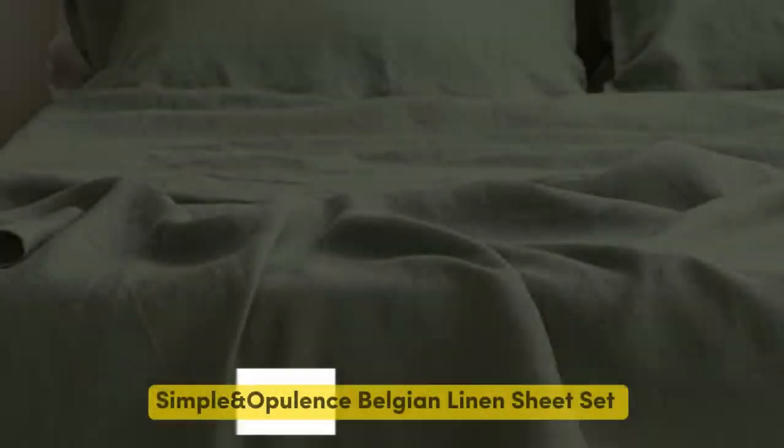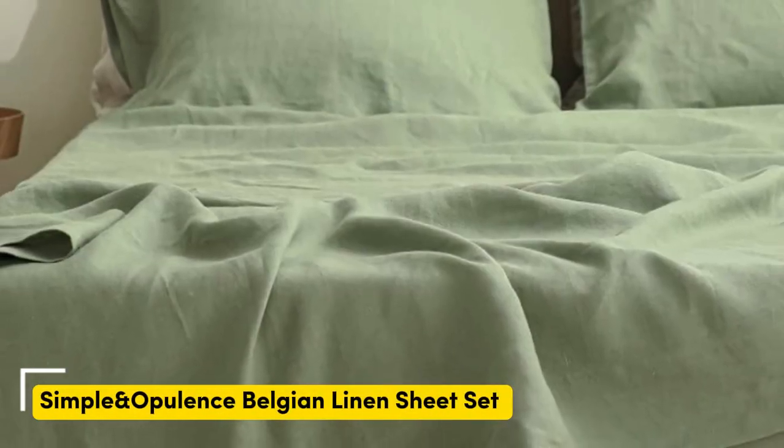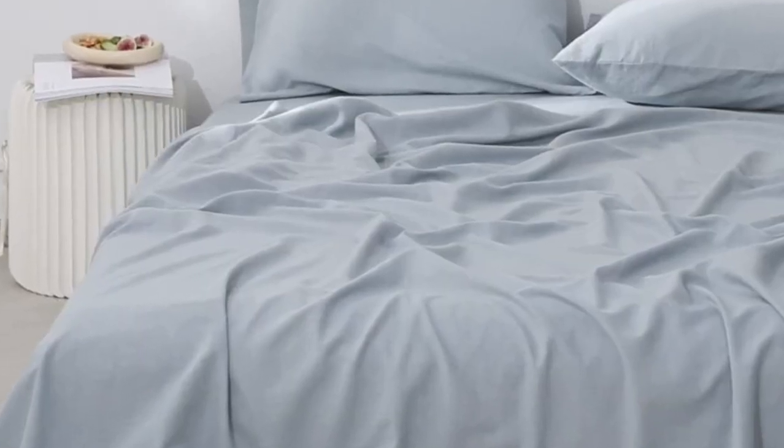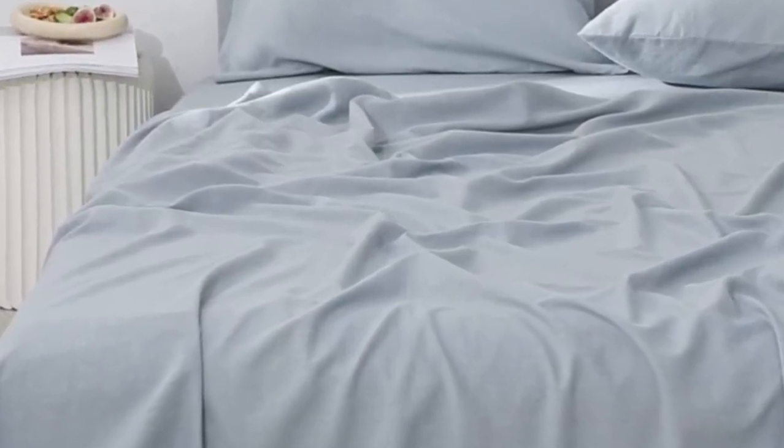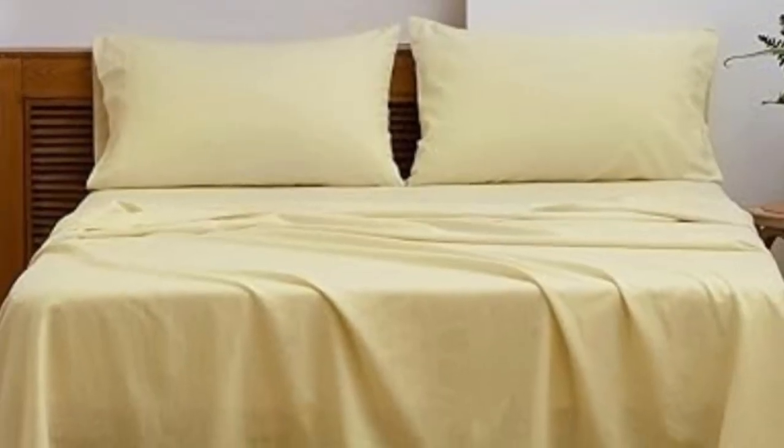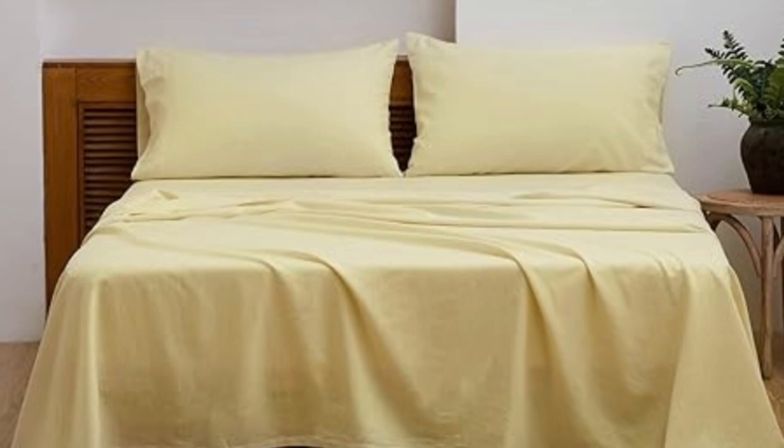Number three. If you're looking to save, consider a blend of linen and cotton to help lower the cost and for a more approachable introduction to linen sheets. This one has 55% linen and 45% cotton in the mix, which can also help the fabric feel softer.